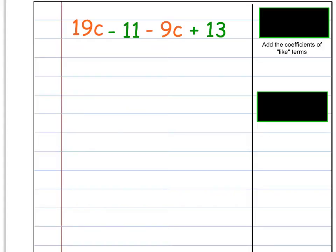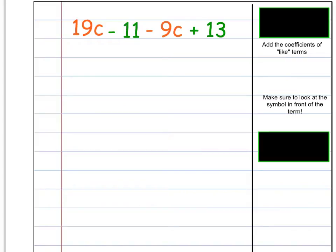This is something that you might want to put into your notes. So when I do it, this is color coded already, but what I like to do is say, okay, this one has a C, and this one has a C. And you need to make sure to look at the symbol in front of the term. So I have my 19C, and see how I have to remember that that's a negative 9C.